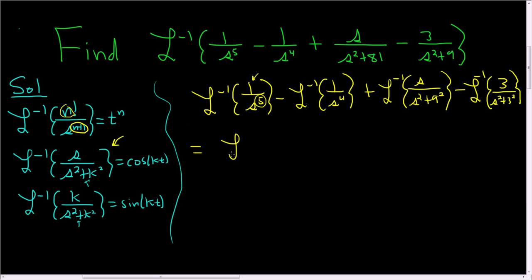So this is the inverse Laplace. And we have a 5, so we want 1 less factorial. So 4 factorial over s to the 5th. But you can't just put a 4 factorial there. You've got to get rid of it. So we'll multiply by 1 over 4 factorial.